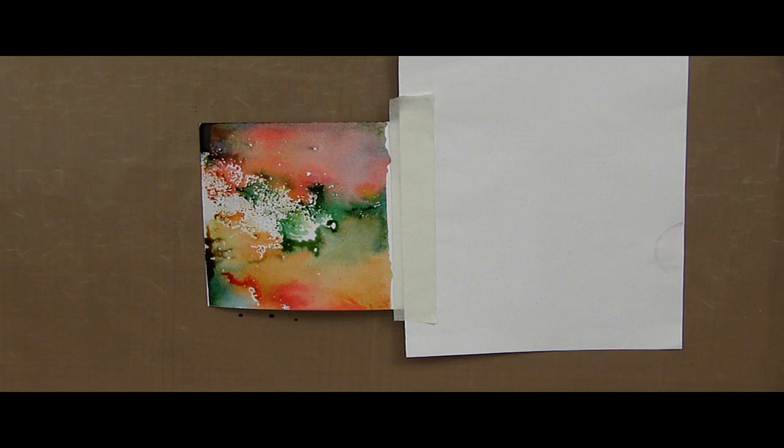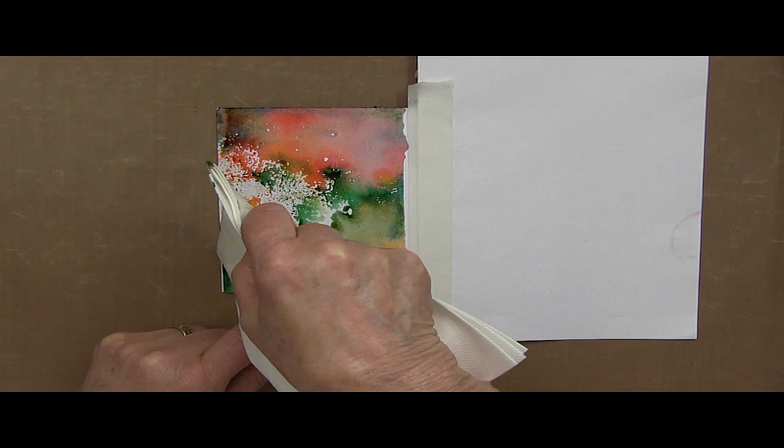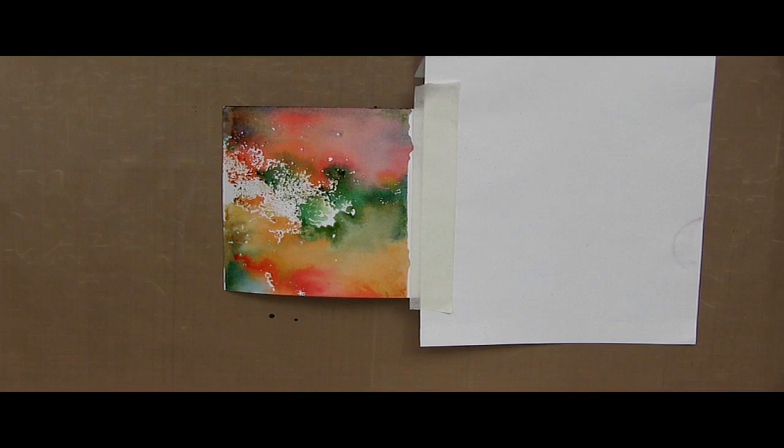Wipe off the block. And then taking a piece of kitchen towel or any other absorbent material, just take up any really wet areas of the distress ink. You can use a heat gun if you want to, but I prefer to let it dry naturally because the colors seem to be more vivid. So we'll move on to the second part in a moment.